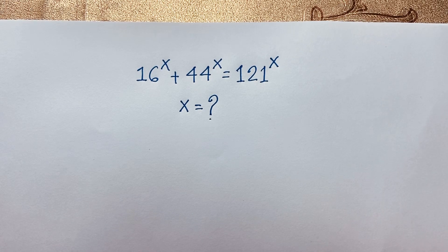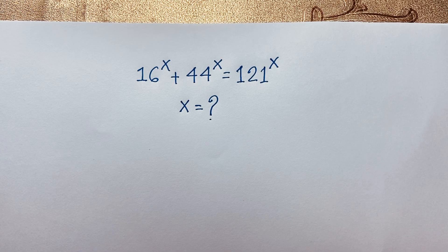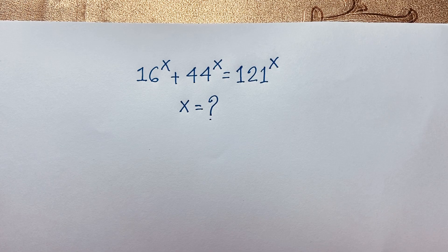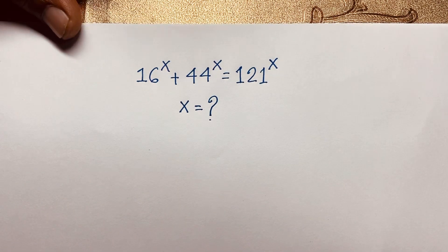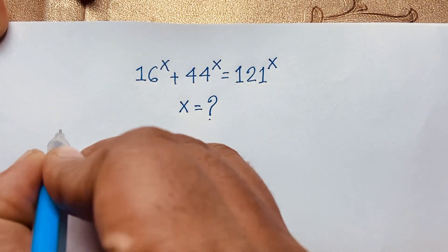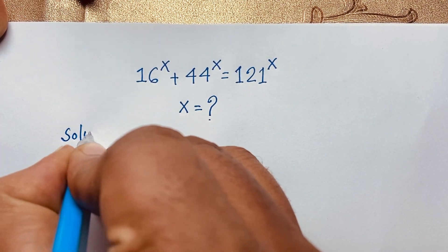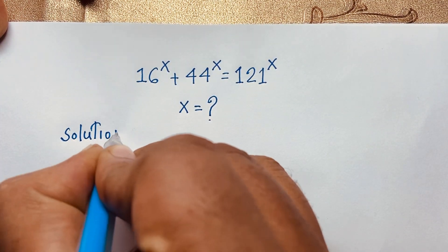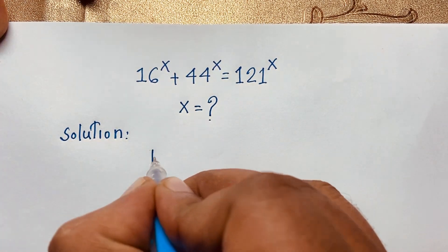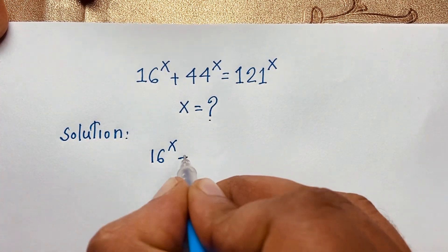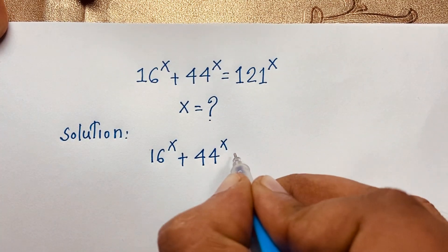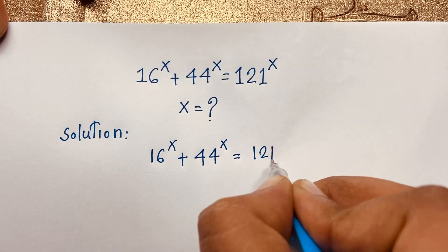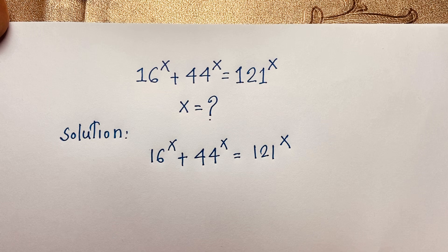Hello everyone. In this video we have solved a nice exponential equation: 16 to the power x plus 44 to the power x is equal to 121 to the power x. What is x? How to solve this exponential math problem? Our question is: 16^x + 44^x = 121^x.